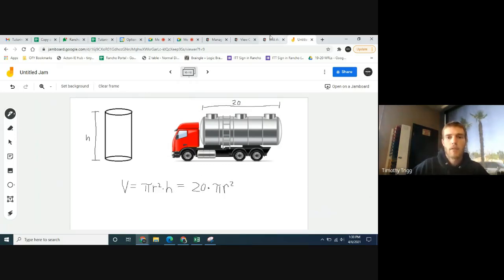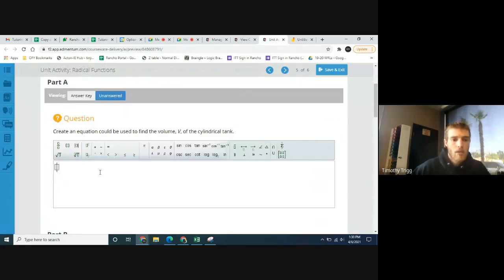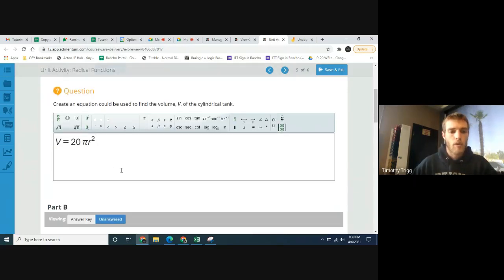We're going to go ahead and put that right here. Capital V for volume equals 20 pi, that's the symbol right here, and then r squared. That's a lowercase r. To do the squared, you see this little superscript thing, click on that, and then squared like that. Hopefully no questions there.